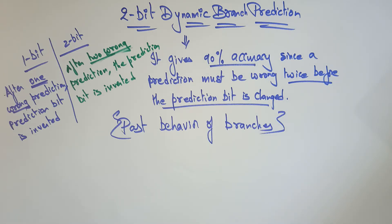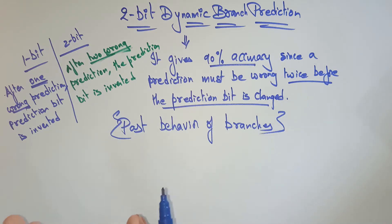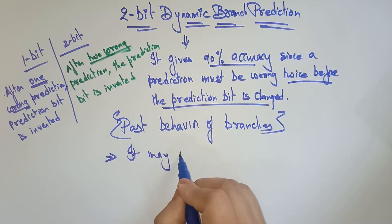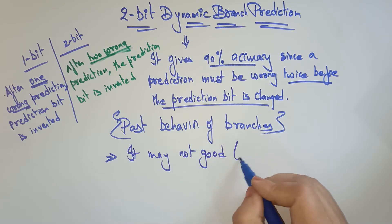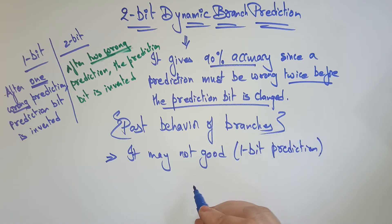What is the disadvantage in 1-bit dynamic prediction? If we mispredict once about the branch, we change our mind instantly about the next prediction. Non-taken is changed to taken — only one wrong prediction and we instantly change the mind, but it may not be good. That is the problem with 1-bit prediction.